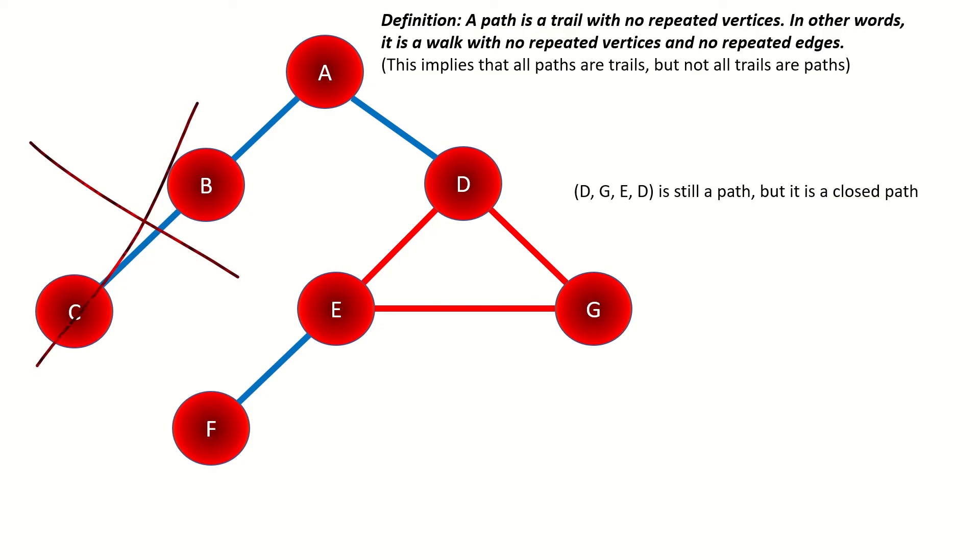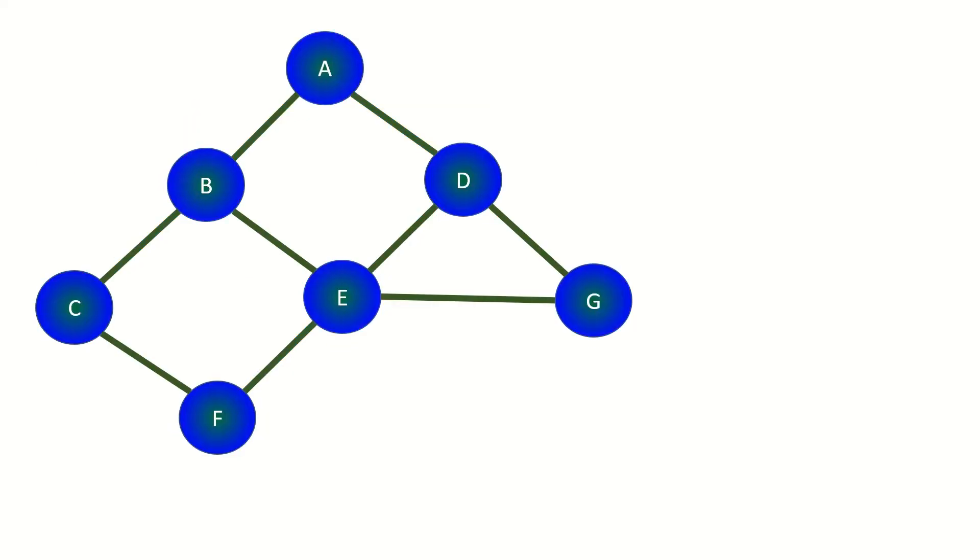It's important to know that a closed path is also known as a cycle. Here are two examples of cycles in a graph.